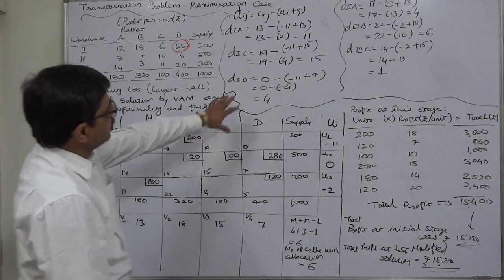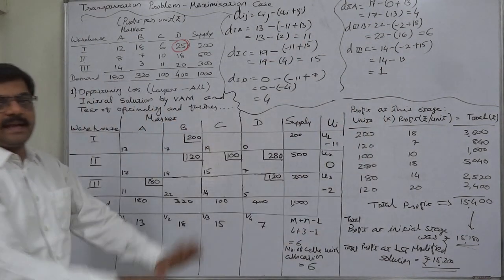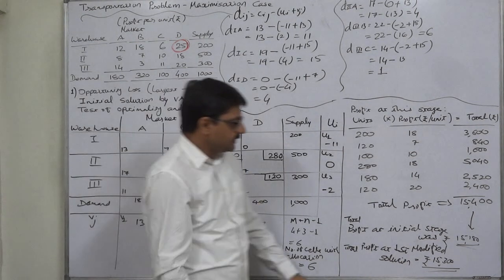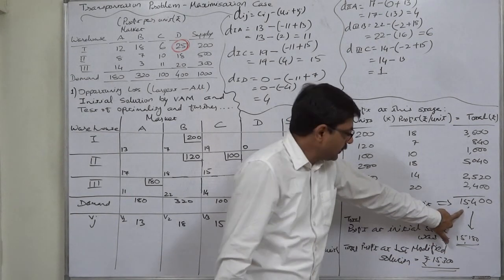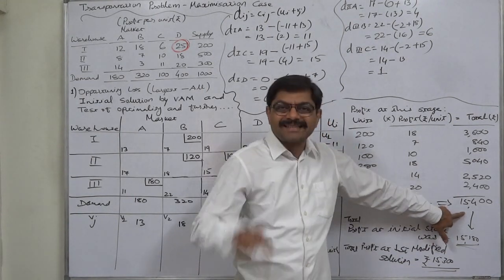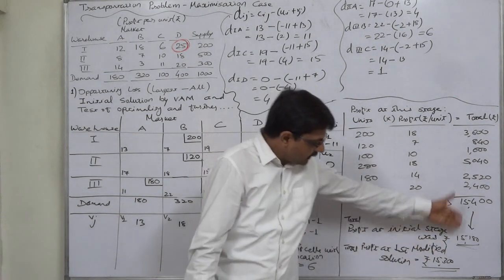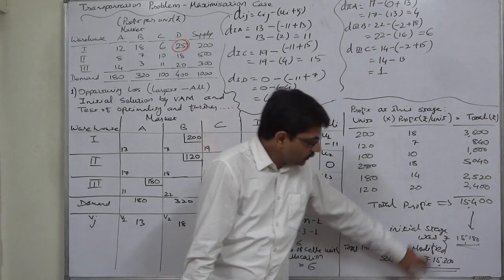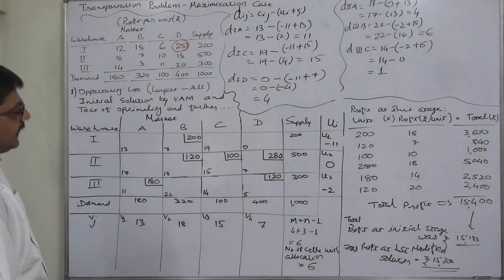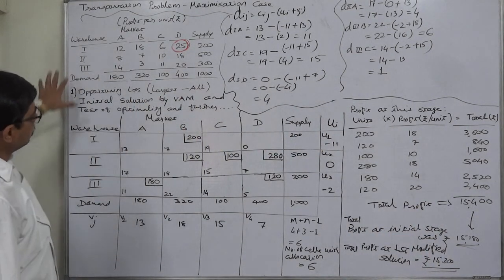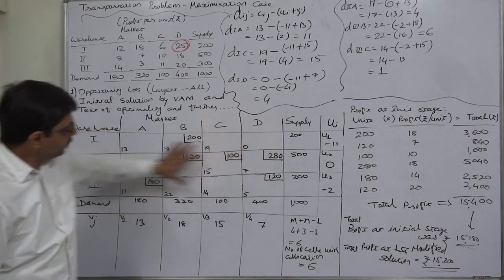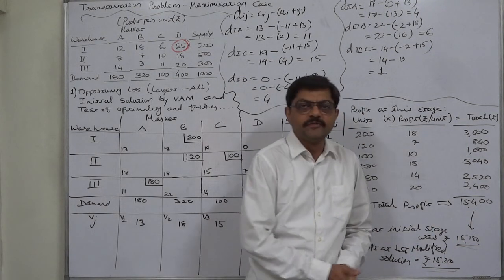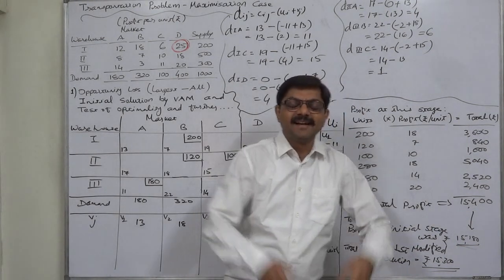So now all the d values are positive, we can say that this is the optimal solution. And hence it is proved that at the optimal solution, the profit is the maximum possible profit. We can compare it with the profit at initial stage and profit at the first modified. So this is the optimal solution, and in this case if the company follows this pattern of transportation of the quantity from warehouse to market, the maximum possible profit will be rupees 15,400. That's it, thank you very much.